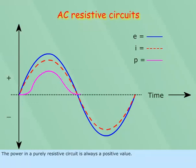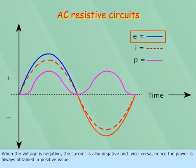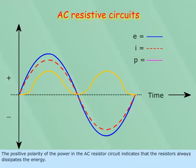The power in a purely resistive circuit is always a positive value. When the voltage is negative, the current is also negative and vice versa. Hence, the power is always obtained in positive value. The positive polarity of the power in the AC resistor circuit indicates that the resistor always dissipates the energy.